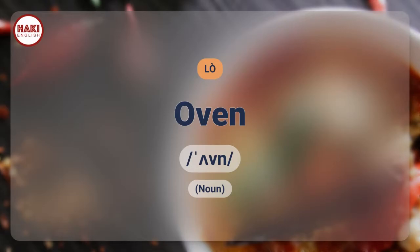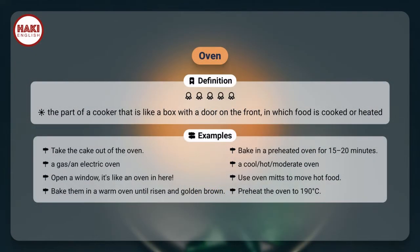Oven. Definition: The part of a cooker that is like a box with a door on the front, in which food is cooked or heated.